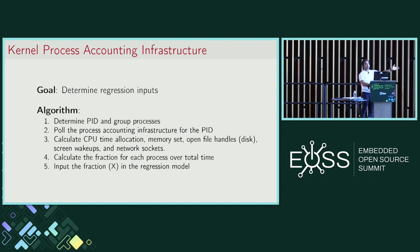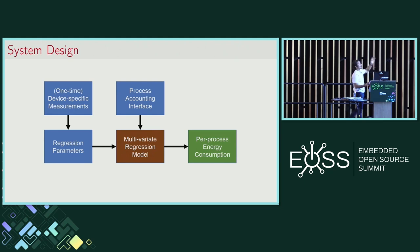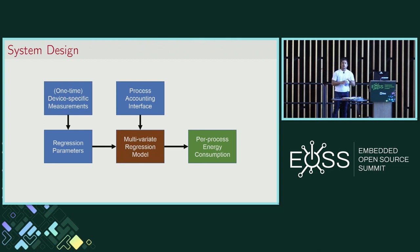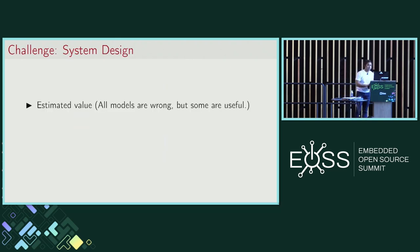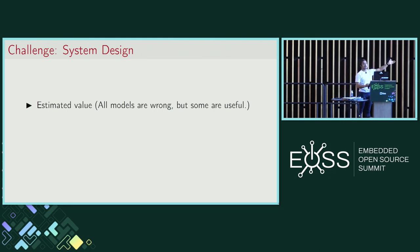To summarize: we have the device-specific measurements for the parameters, we have the inputs from the /proc interface, and that gives us the data we need to predict an energy value. Now, this system predicts an energy value — at the end of the day, it is an estimated value, not exact ground truth. I like this line from the machine learning community: all models are wrong, but some are useful. My hope is to build a useful model.